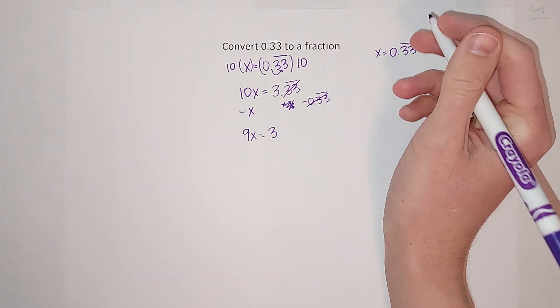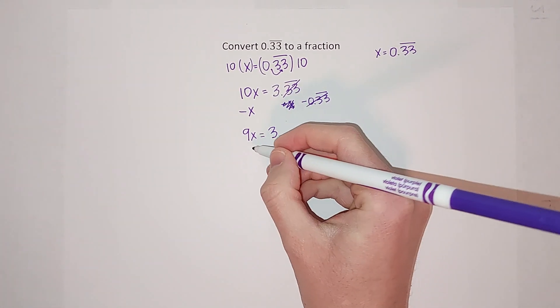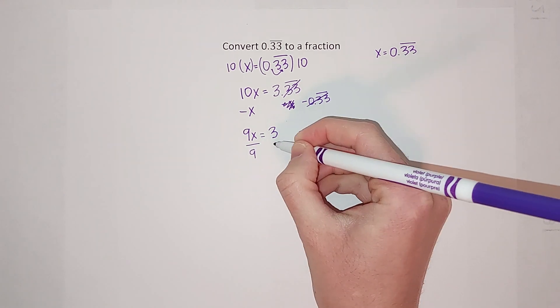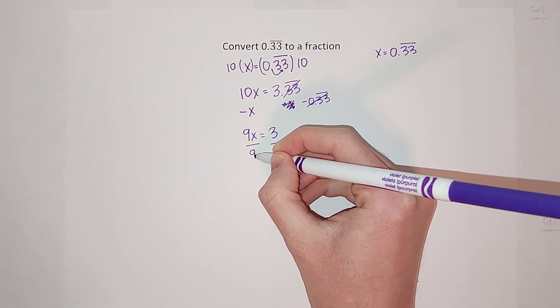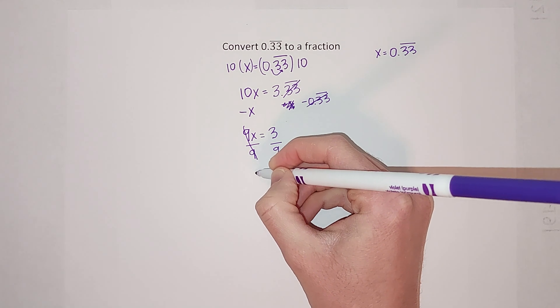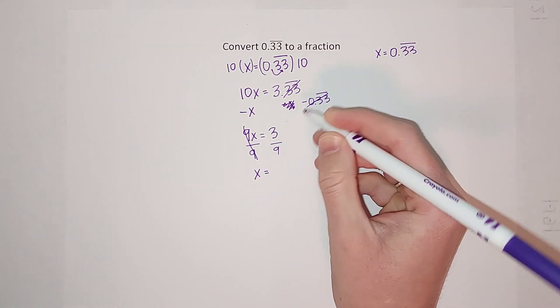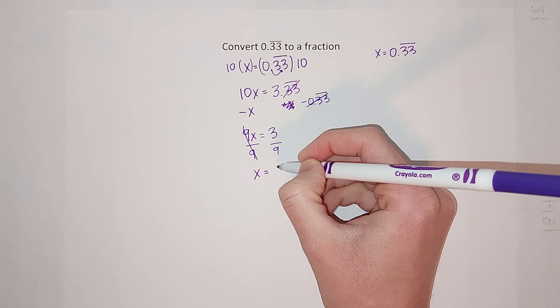So this is 9 times x. To undo that, I'm going to divide by 9 on both sides. Those go away, so I'm left with x equals 3 ninths, which simplifies down to 1 third.